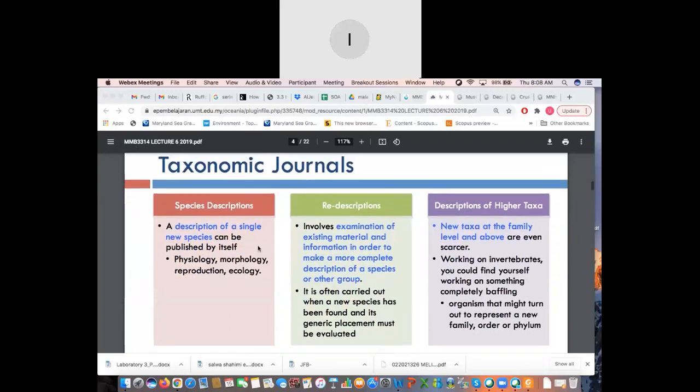So, you'll have one that is a species description. So, a description, so usually a species description is a description of a single new species and it can be published by itself. So, the things that you describe of this single species is usually about, you may talk about the physiology, the morphology, reproduction, and ecology. So, this one's usually, they may come under the taxonomic discussion as I've mentioned. If you're talking about description and diagnosis, it's very catered to the species itself. It's a different context other than the discussion.